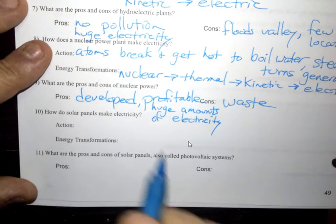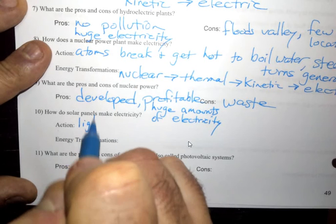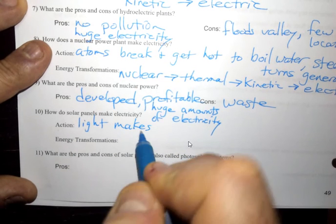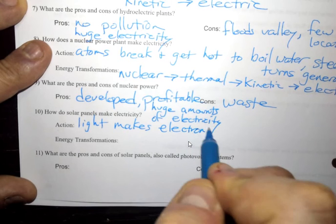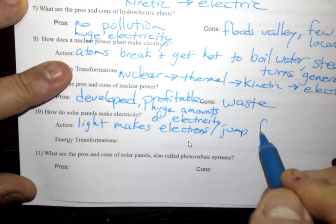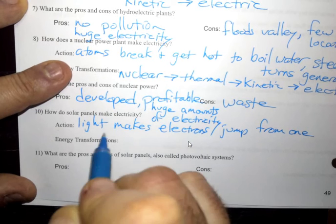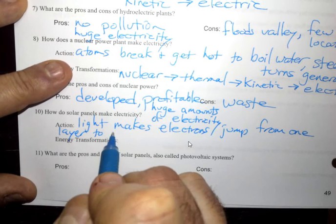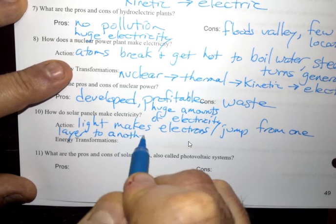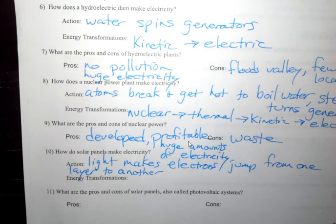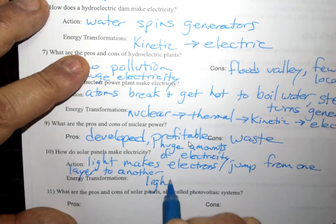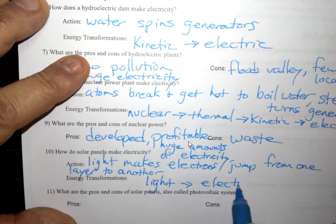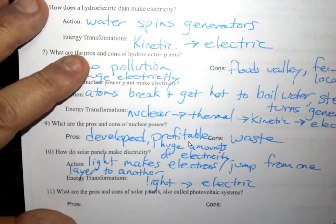Solar. Action: we have light makes electrons jump from one layer to another. What looks like a single solar panel to us is actually two layers with a tiny little gap in between. And the electrons can jump from one layer to the other if they get hit by the right amount of light. Energy transformation, then, is just simply from light energy into electric energy. This is the only way of getting electric energy without involving a generator of some sort.